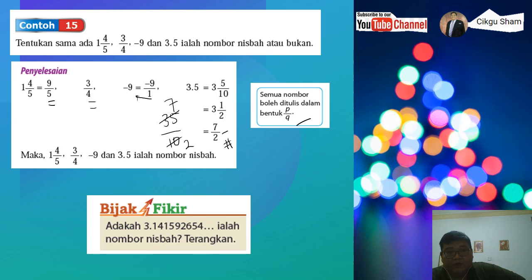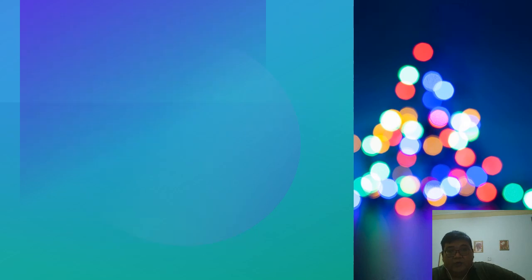Okay, semua nombor kita boleh tulis dalam bentuk P per Q kan, dan syarat yang kedua P integer Q integer, maksudnya pengangka integer, penyebut pun integer, atas integer, bawah integer, tak kisahlah dia negatif ke positif, tapi yang bawah tak boleh sifar. So semua boleh ditulis, maksudnya dia nombor nisbah. Okay, adakah 13.141592654 ni ialah nombor nisbah? Terangkan. Ini adalah nilai pi sebenarnya, 22/7. So cuba bincangkan dengan guru-guru, adakah dia nombor nisbah?